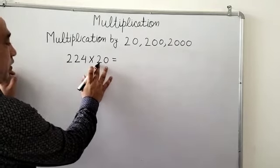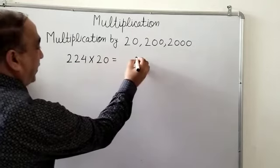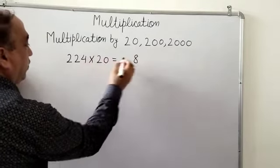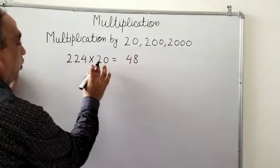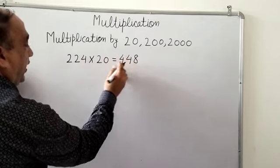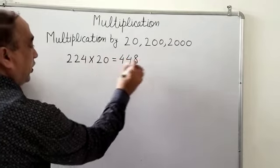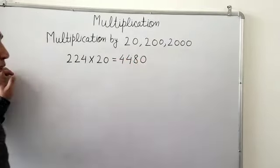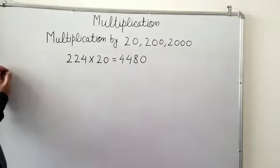2 fours are 8, 2 twos are 4, 2 twos are 4, and we will put this 0 in our answer and the answer will become 4480.